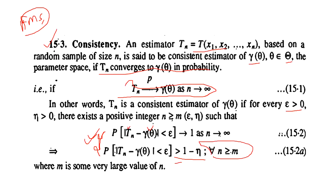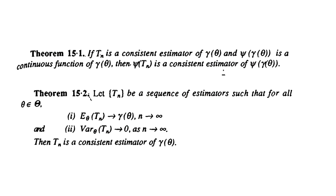Now let's see the main theorems for consistency. The first result: if Tₙ is a consistent estimator for γ(θ), and ω(γ(θ)) is a continuous function, then ω(γ(Tₙ)) is also a consistent estimator for ω(γ(θ)). This is the invariance property — if you have any polynomial equation that is continuous, then it is also a consistent estimator.